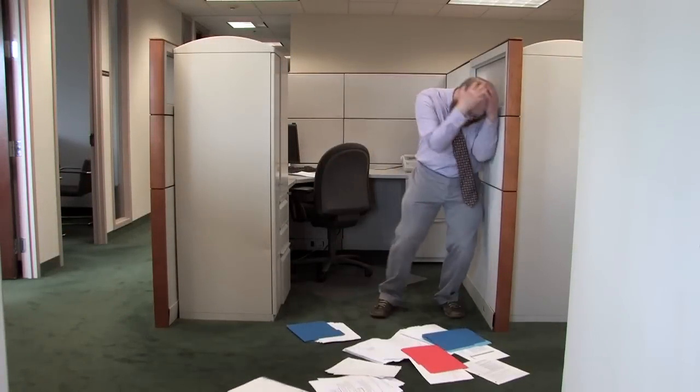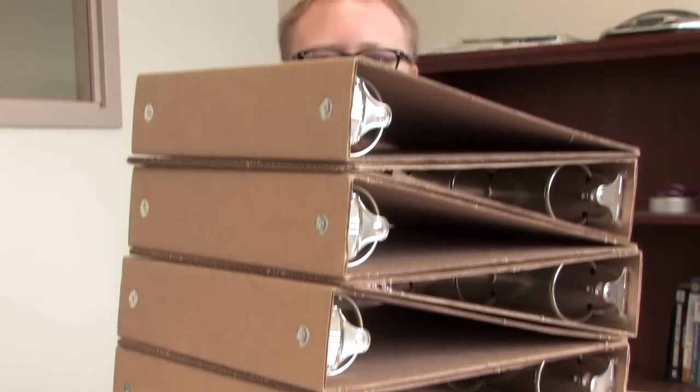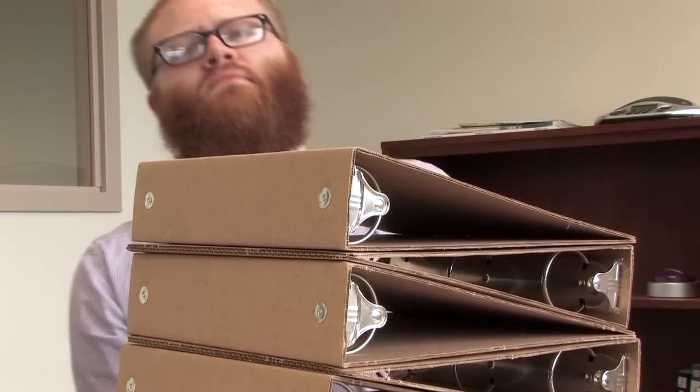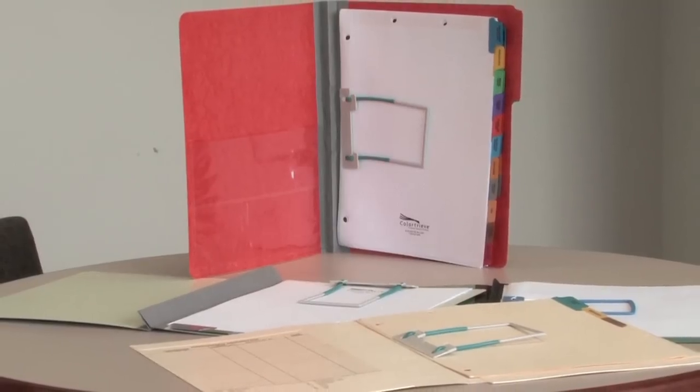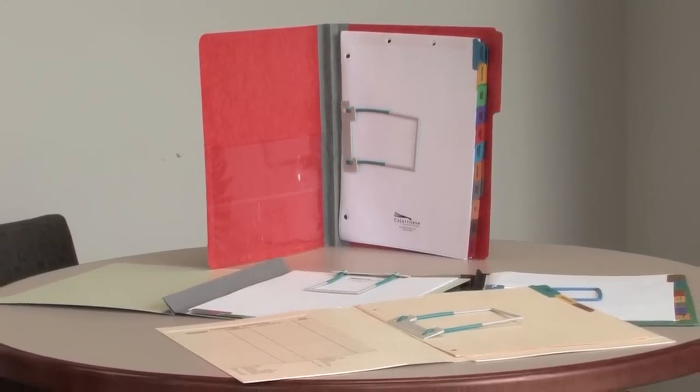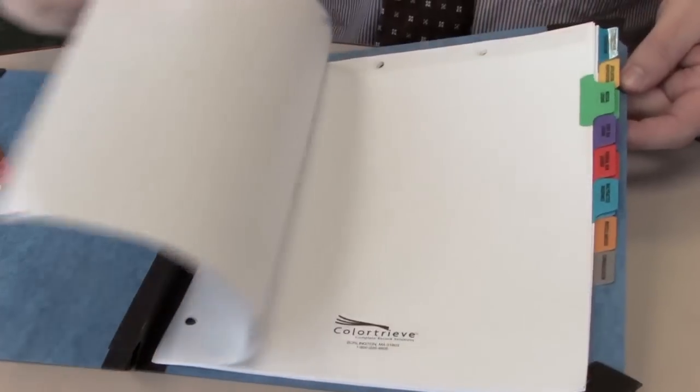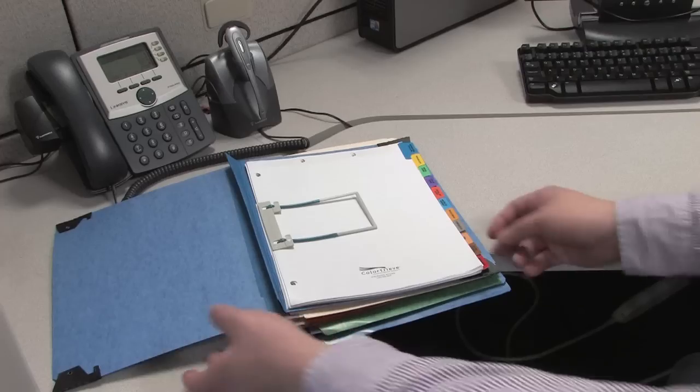Do you need help holding your important documents together? Would you like the organization a three-ring binder affords without the storage nightmare it creates? Meet ColorTreeve's ReadyClip, the little wonder that meets all of your document organization and storage needs. It converts any file folder to function like a three-ring binder in seconds.